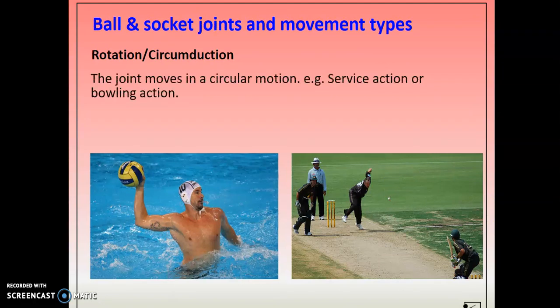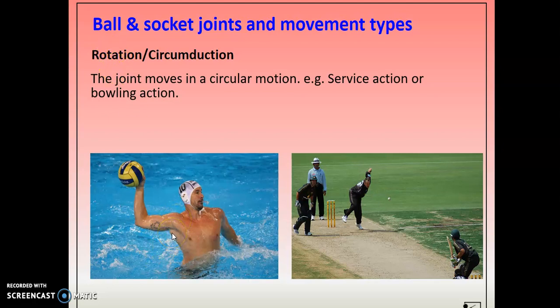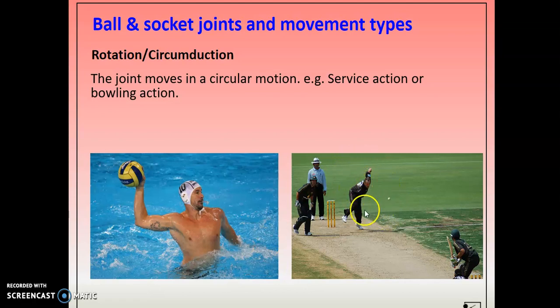Ball and socket joints also allow rotation and circumduction. Rotation is where you partly rotate around the joint and stop. Circumduction is where you move all the way around the joint — for example, bowling in cricket.